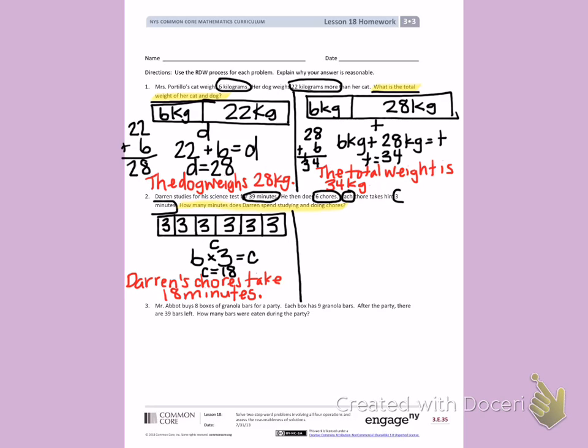Now, looking back at my question. How many minutes does Darren spend studying and doing chores? Darren spends 39 minutes studying and 18 minutes doing chores. I want to know how many minutes that is. If I look back up at number 1, my tape diagrams up there look the same as my second step, where I have 2 parts, but I'm missing the total.